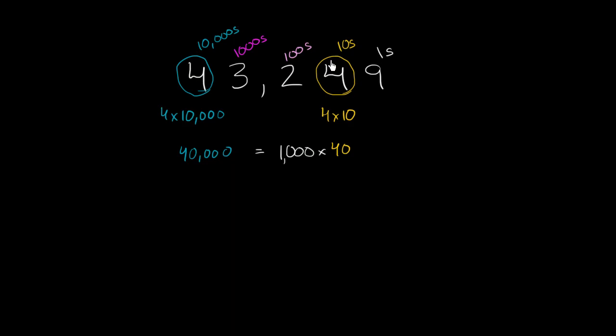So if you're going from this 4 to this 4, times 10, times 10, times 10. You multiply by 10 the place value. And you see that with the place values right over here.